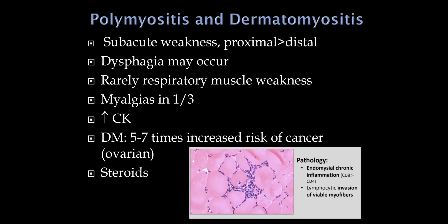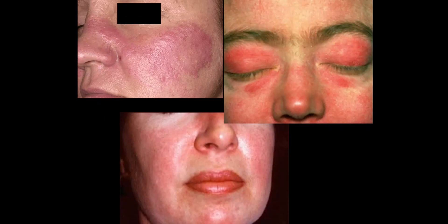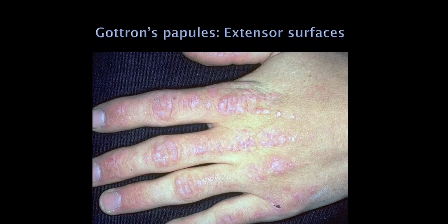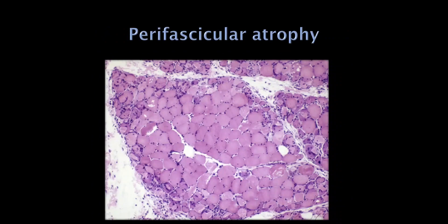Dermatomyositis has more specific clinical features. The heliotropic rash involves the cheeks and eyelids, and there's often periorbital edema. Along the extensor surfaces we can see Gottron's papules over the knuckles and dorsum of the hand. The muscle biopsy in dermatomyositis is very specific — it shows perifascicular atrophy, with significant involvement around the periphery of the fascicle compared to healthy fibers in the center.